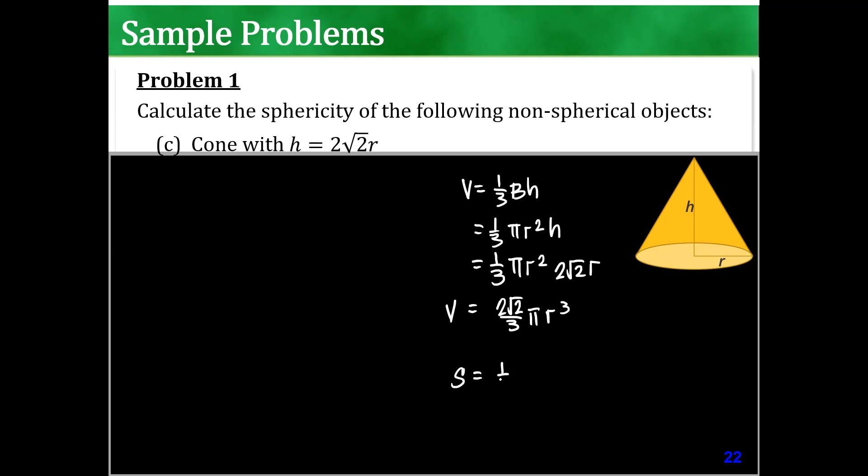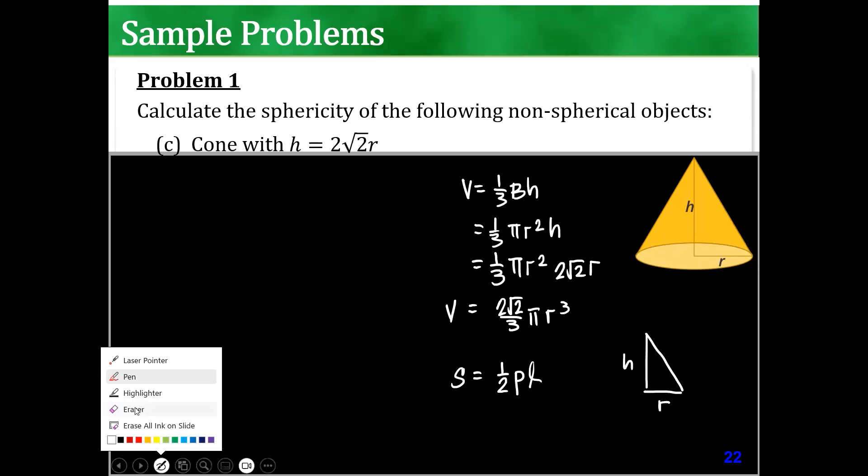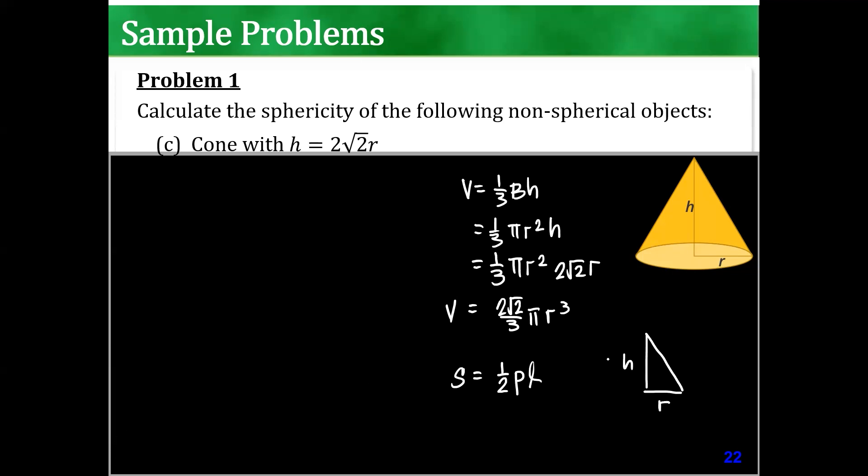The surface area is 1 half perimeter of the base times the slant height. That's our problem, what is the slant height again? Right? So in those cases what I would do is I'll draw a triangle. This is r, this is h, but then h is given already. I'll write it, h is given to be 2 square root of 2 r. This is l. So l squared is equal to 2 squared times 2, 4 times 2 is 8, 8 r squared plus r squared. Therefore, l is 3 r.